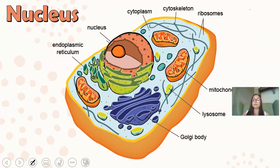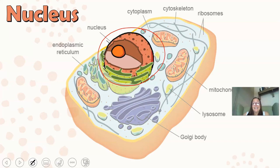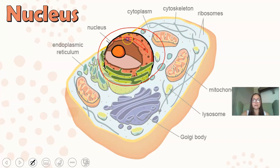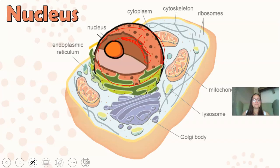Now let's go through the organelles found in eukaryotic cells. The first is the nucleus, which is membrane-bound. It contains our DNA and is where transcription occurs — where the information in our genes is transcribed, or copied, into RNA. The nuclear envelope surrounds the nucleus, and you can see nuclear pores — holes through which mRNA travels to exit the nucleus during protein synthesis.